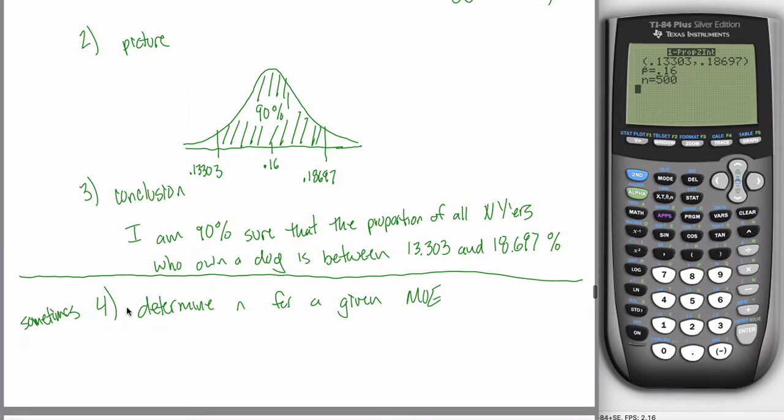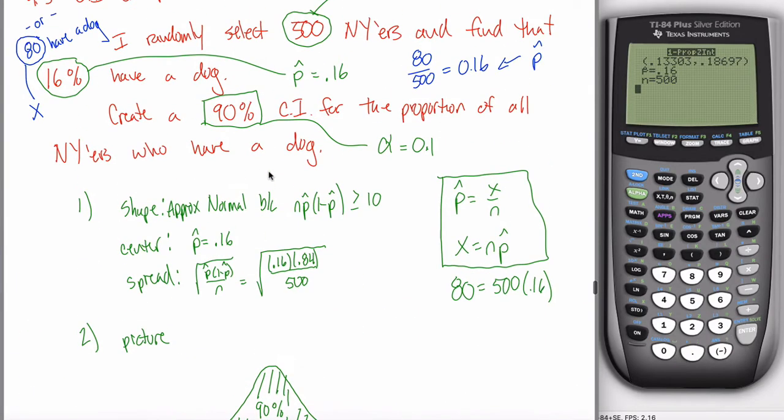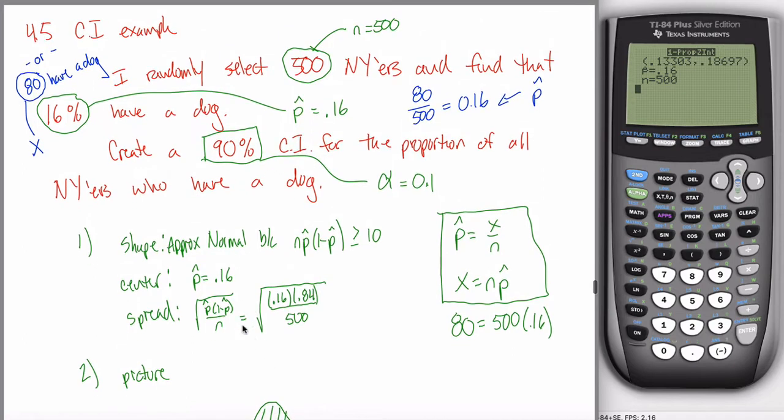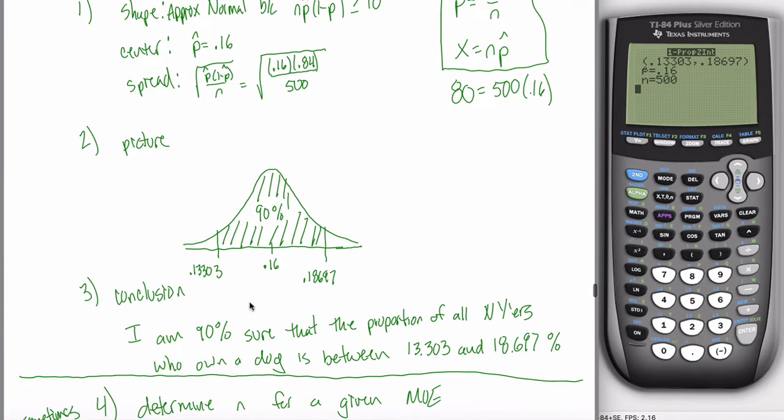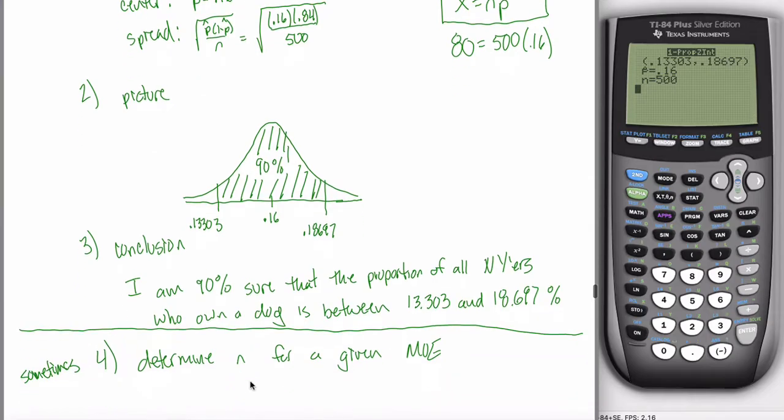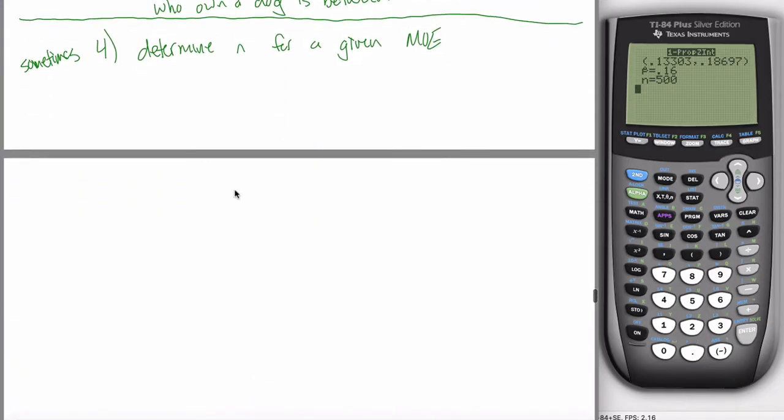But sometimes there was also a fourth step added on. It had this weird formula that I told you you didn't have to memorize, that I would always provide you with, and it allowed you to find a sample size if your margin of error was specified for you. When we're dealing with proportions, it's kind of the same thing. You could sometimes have a fourth step that could be added on at the end, and what I'm going to do in this video is show you how to deal with that fourth step.